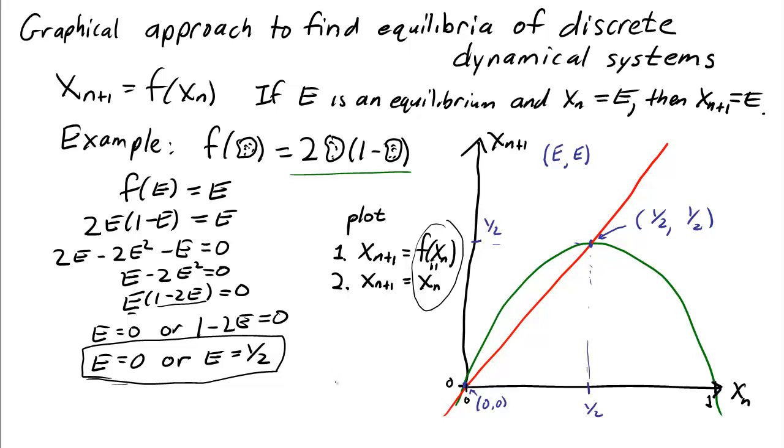In this way, we can see it's very easy to find the equilibria graphically. We just plot the function and the diagonal and look for the points at which those two graphs intersect.